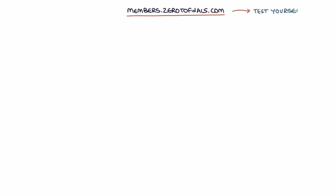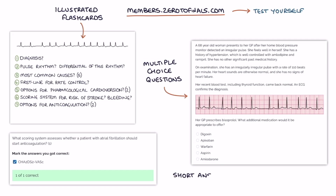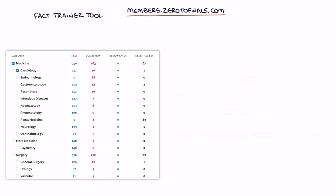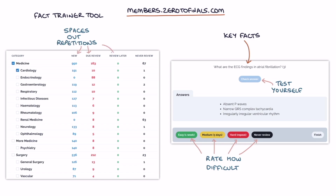Head over to members.zerotofinals.com to test yourself on how much you understood and remembered from this video. The members site contains illustrated flashcards, multiple choice questions, and short answer questions designed to complement the Zero to Finals resources. It also features an Anki-like fact trainer tool to train your knowledge on key facts for your medical exams — you test yourself on a fact, rate how difficult you found it, and the site spaces out your repetitions telling you when to review again. Spaced repetitions help ensure facts stay in your long-term memory. Thanks for watching.